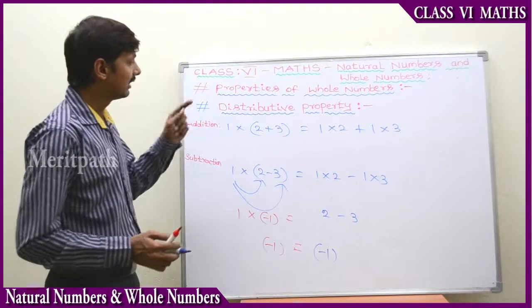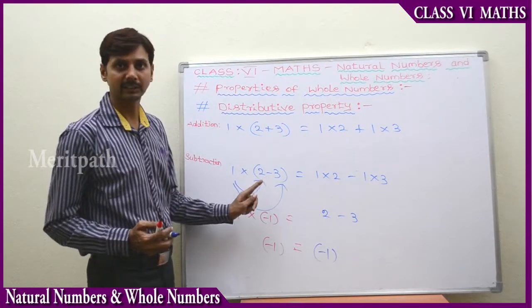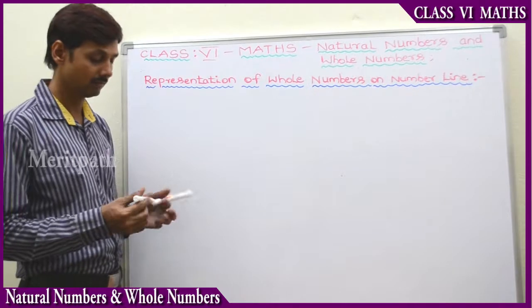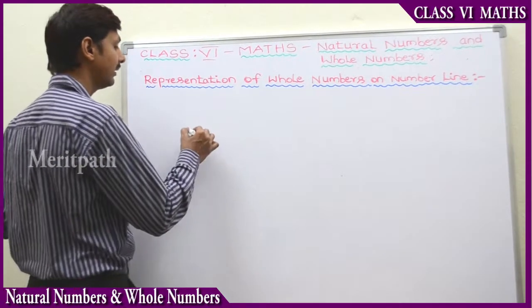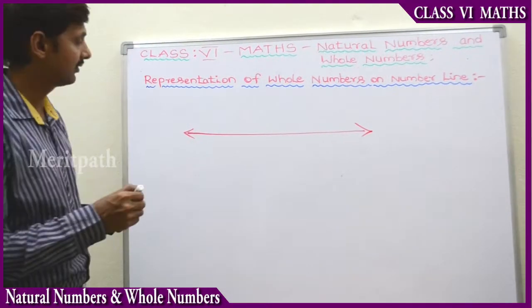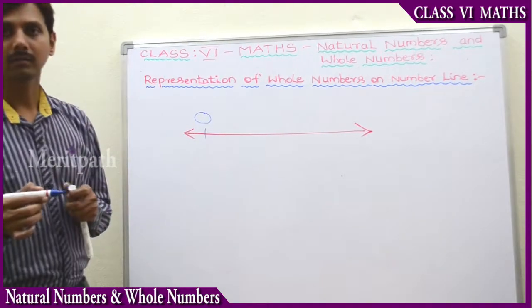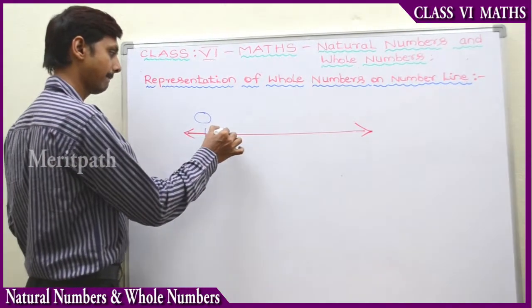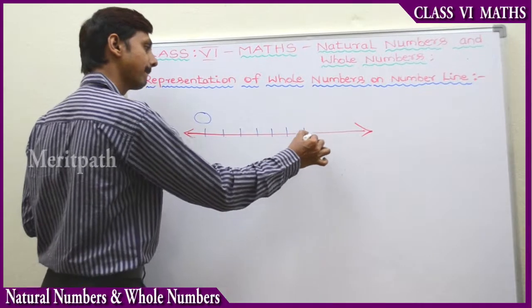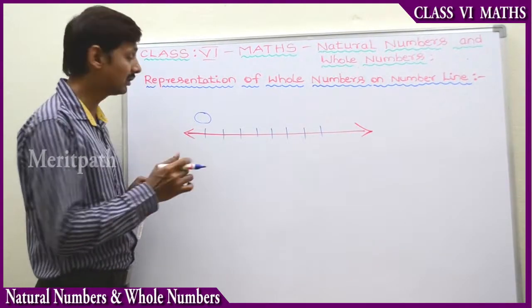So up to now we have learned distributive property — multiplication over addition and multiplication over subtraction. Now, representation of whole numbers on the number line. We can represent whole numbers on the number line. Let's draw a straight line. Let's take a point and call it O. Mark some points which are equal distance from each other.